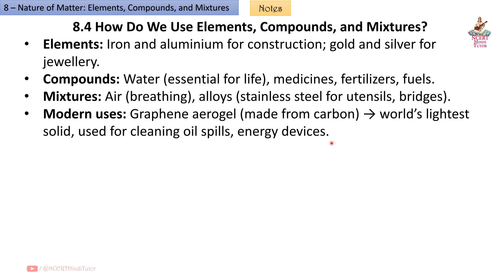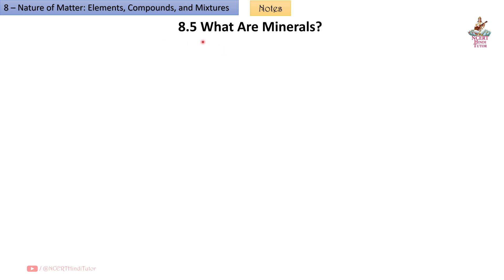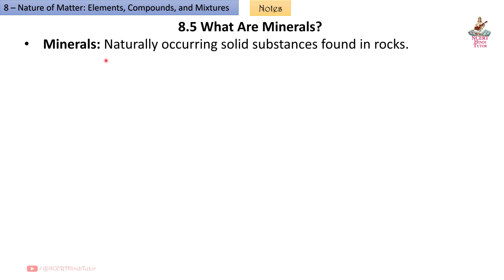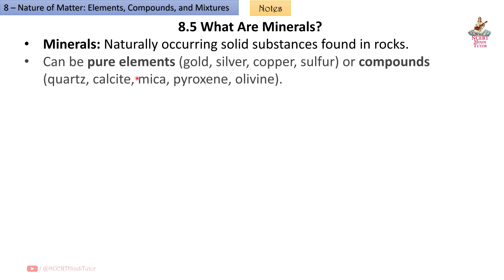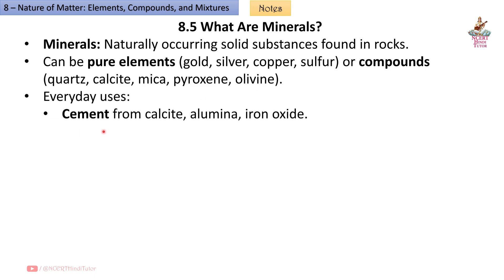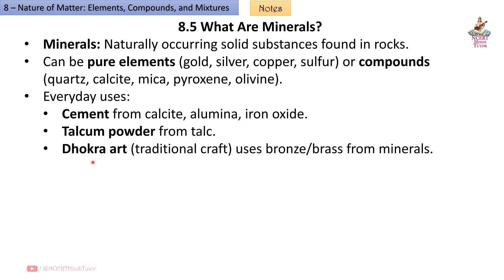8.5 What are Minerals? Minerals are naturally occurring solid substances found in rocks. They can be pure elements (gold, silver, copper, sulfur) or compounds (quartz, calcite, mica, pyroxene, olivine). Everyday uses: cement from calcite, alumina and iron oxide; talcum powder from talc; Dhokra art — a traditional craft uses bronze and brass made from minerals.